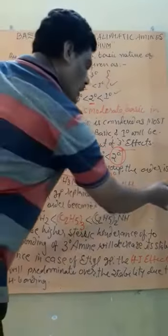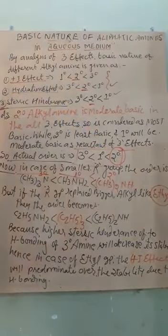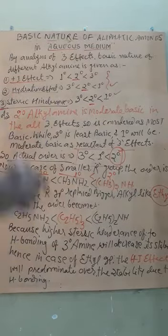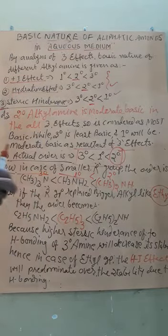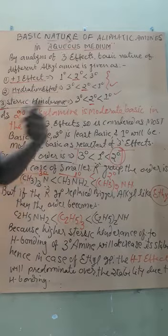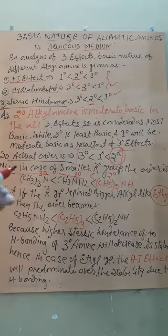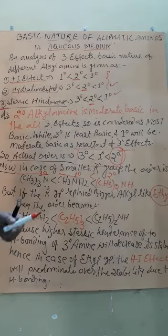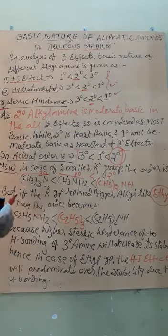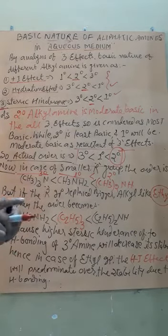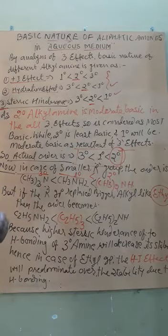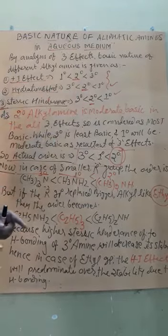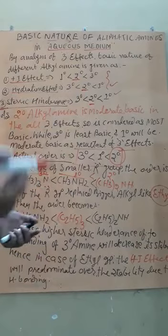But if we replace R group by bigger alkyl radical like ethyl, that is C2H5, now the C2H5 is bigger as compared to CH3. Therefore, here the inductive effect will predominate over the hydrogen stability effect or hydration effect. It is because three number of C2H5 will not easily allow the hydrogen to come close.